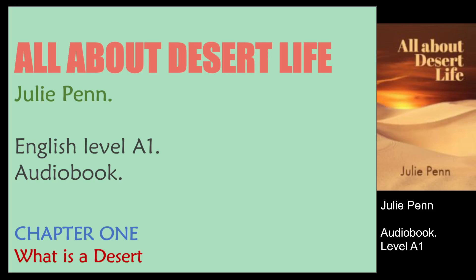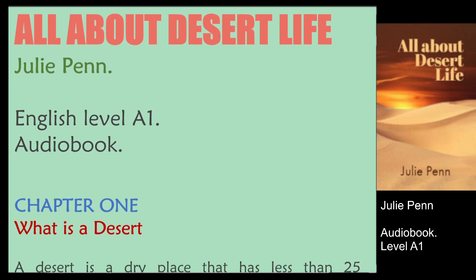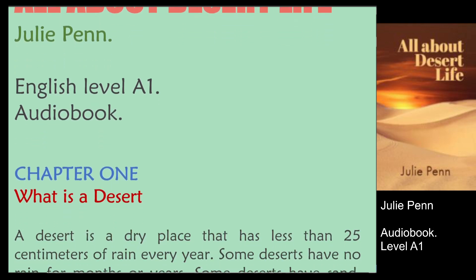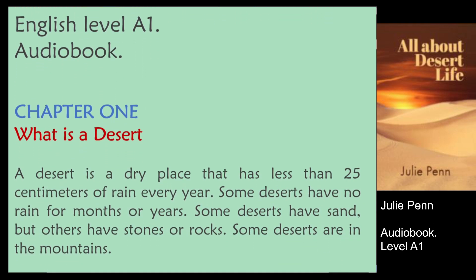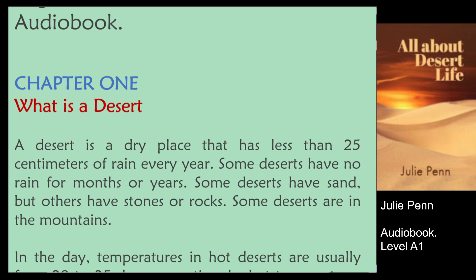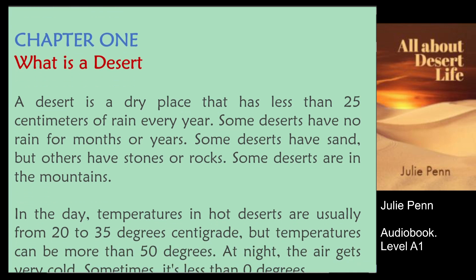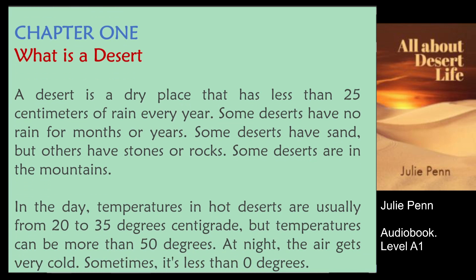All About Desert Life by Julie Penn. Chapter 1: What is a desert? A desert is a dry place that has less than 25 centimeters of rain every year. Some deserts have no rain for months or years.